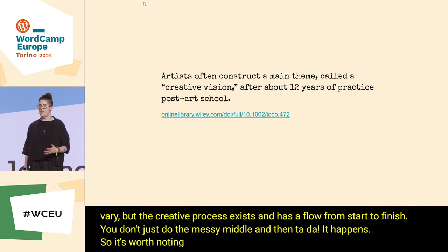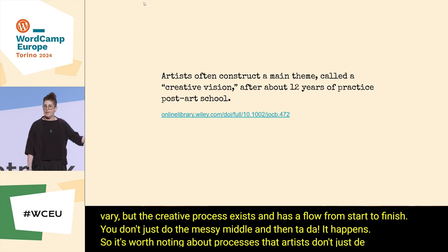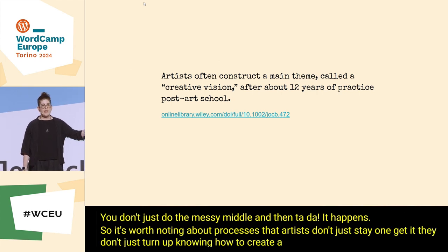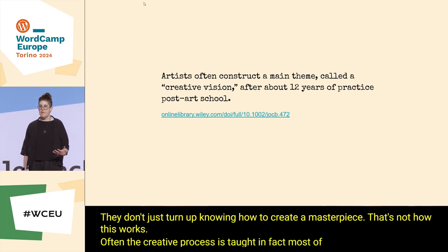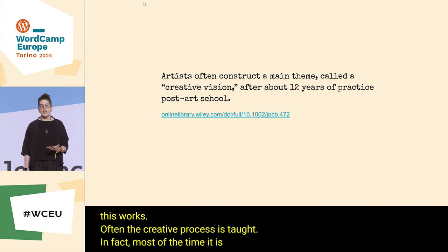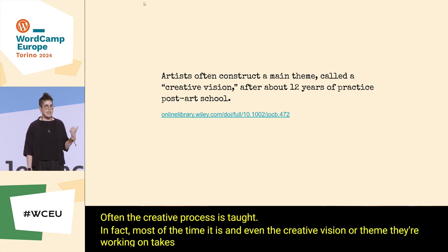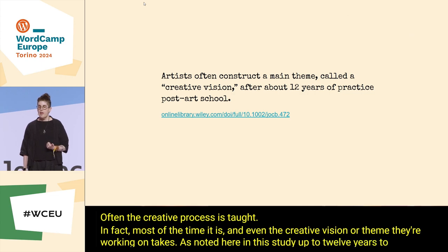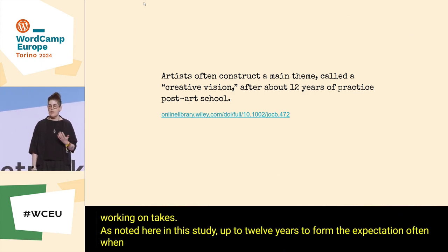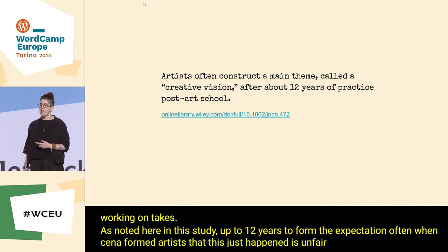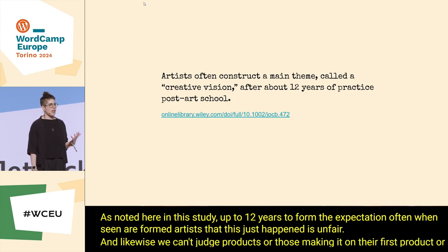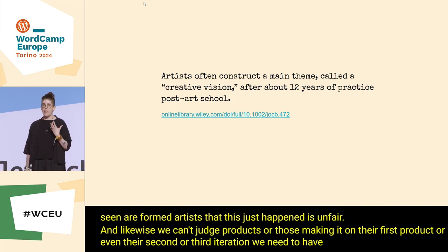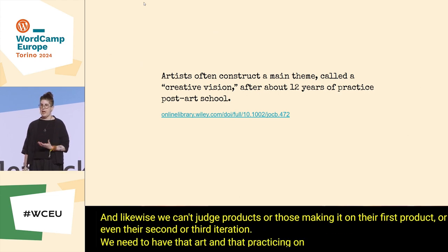It's worth noting about processes that artists don't just on day one get it. They don't just turn up knowing how to create a masterpiece. Often the creative process is taught — in fact most of the time it is. Even their creative vision or theme they're working on takes up to 12 years to form. Likewise, we can't judge products or those making them on their first, second, or third iteration. We need to have the practice of products themselves. Just like art needs to be learned, so does making products.